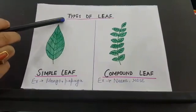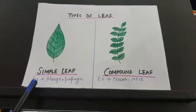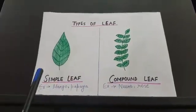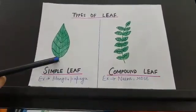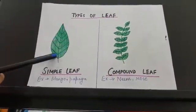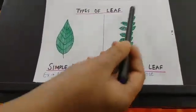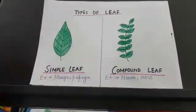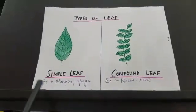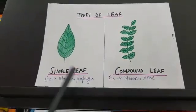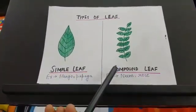Now let us know about the types of leaf. There are two types of leaves: simple leaf and compound leaf. In case of a simple leaf, the lamina is not divided into leaflets — there is only a single lamina. In case of a compound leaf, the lamina is divided into many small leaflets. In plants like mango and papaya we see simple leaves, while in neem and rose we see compound leaves.